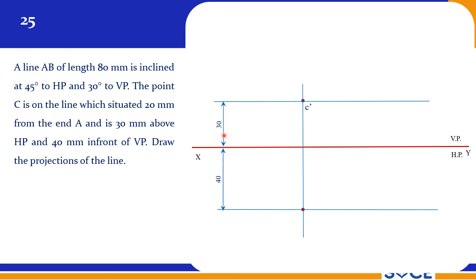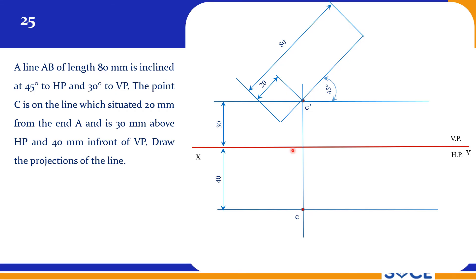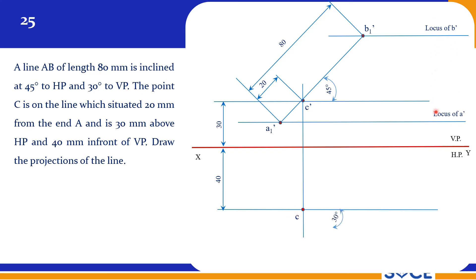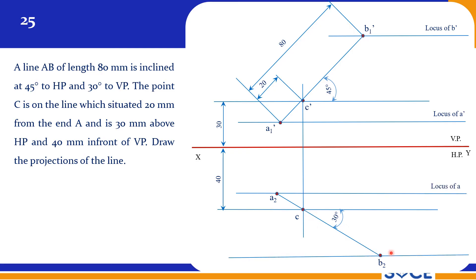C dash is 30 mm above HP and 40 mm in front of VP. At the 45-degree line, take 20 mm on the A side and 60 mm on the B side — total 80 mm. Similarly at 30 degrees to VP, mark A1 dash and B1 dash. Take 20 mm from C towards A2, and 60 mm from C towards B2. This gives the locus of A dash, locus of B dash, locus of A, and locus of B, since both ends are not fixed.